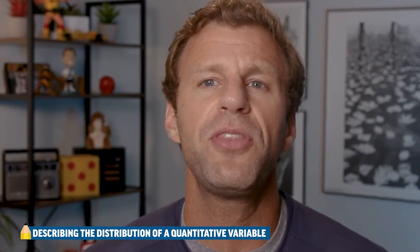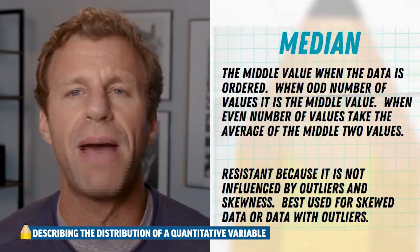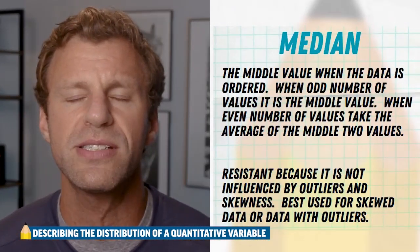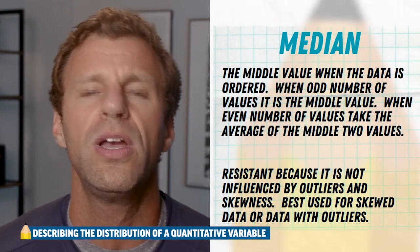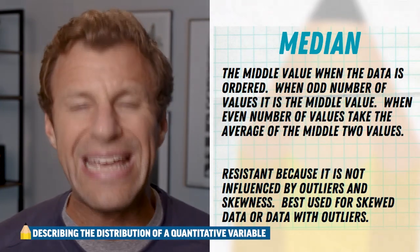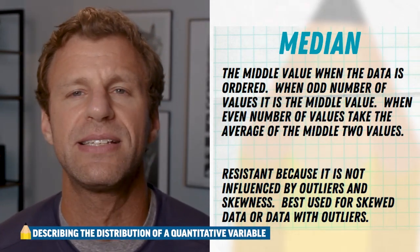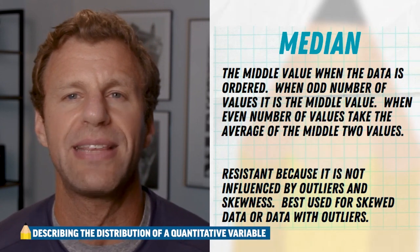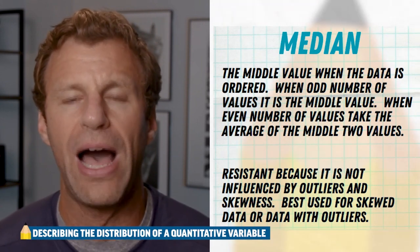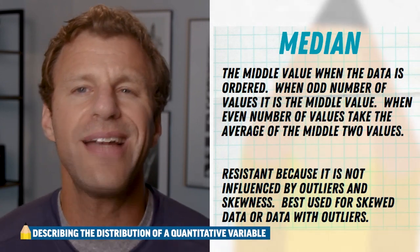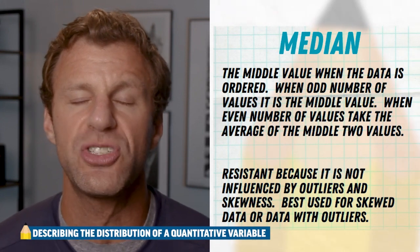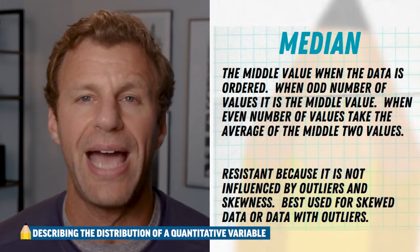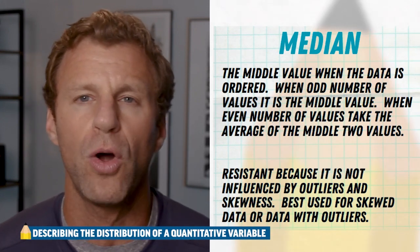The median is simply the middle value, no matter what. If you have an odd amount of data points, then there is an exact median in the middle. If you have an even number of data points in AP Statistics, we just take the average of the middle two values. There is no formula to tell you what the median is — you simply have to put your data in order and find the middle.